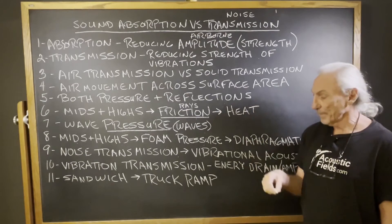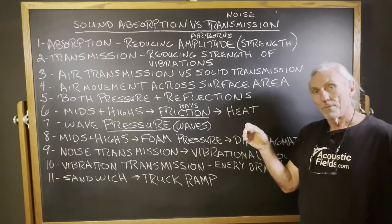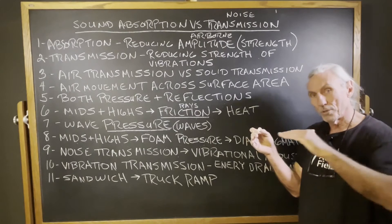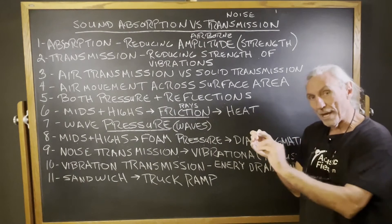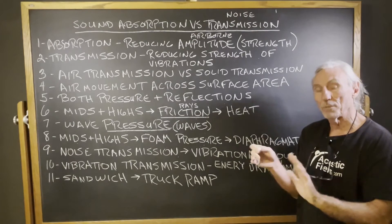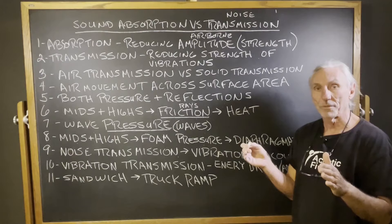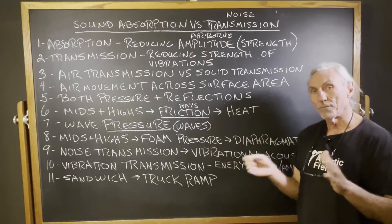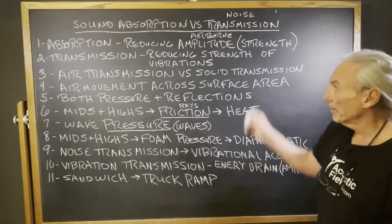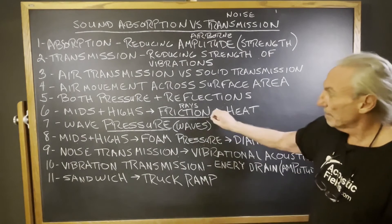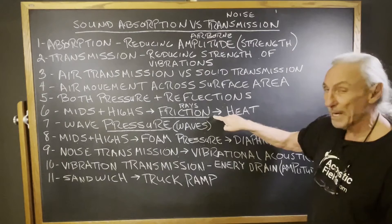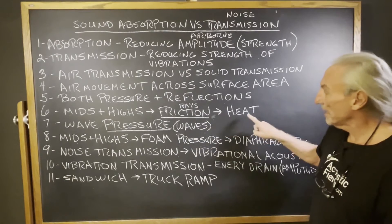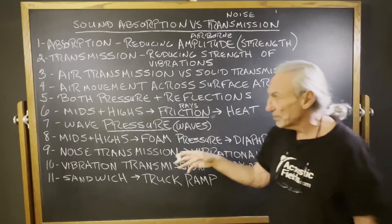Let's use foam as an example. Air goes across the surface of the foam. The structure of the foam is open-celled, so as it goes across the structure, some enters the cell, but a lot just goes across the surface area and creates friction. Friction causes heat. Heat is an energy transformation — not getting rid of the energy, but transforming it from air movement to heat through friction, and we get absorption that way. We reduce the strength or amplitude. Middle and highs, we work with the rays — that's energy usually above 125 Hz — working with rays, friction, heat, and energy transformation.